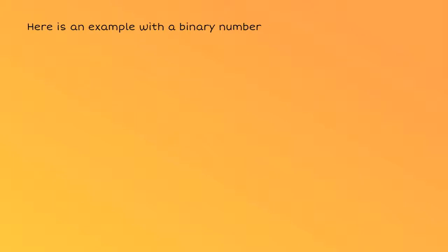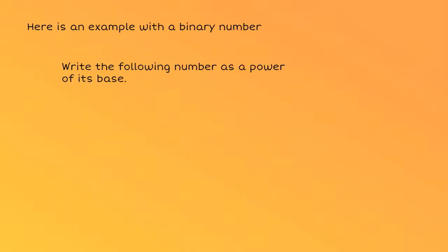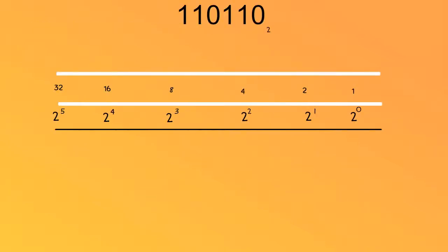Here's an example with a binary number. Write the following number as a power of its base. In the base 2 place value system, we count in multiples of 2. So if I place my number in the place value column, then I can write it in expanded form like this.